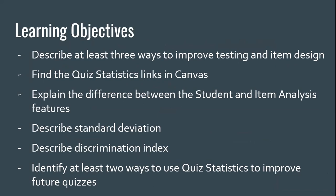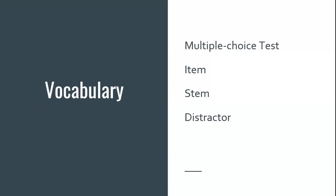Our learning objectives for this afternoon are: describe at least three ways to improve testing and item design; find the quiz statistics links in Canvas; explain the difference between the student and item analysis features; describe standard deviation; describe the discrimination index; and identify at least two ways to use quiz statistics to improve future quizzes.